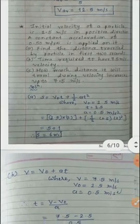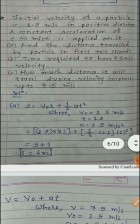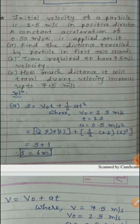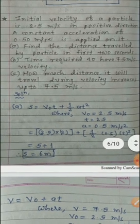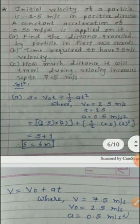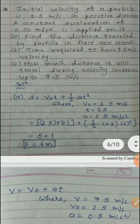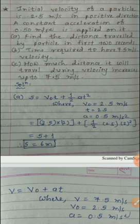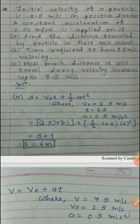Now for the next example: initial velocity of a particle is 2.5 meter per second in positive direction. A constant acceleration of 0.50 meter per second square is applied on it. Find the distance travelled by the particle in the first 2 seconds.